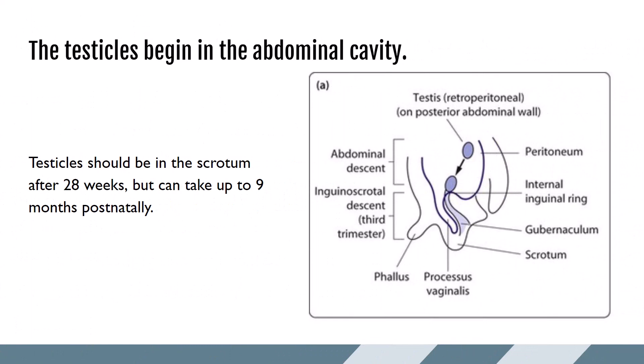Between 4 and 8 weeks gestational age, embryos with XY chromosomes begin to form testicles within the abdominal cavity. As human chorionic gonadotropin, or HCG, perfuses the embryo, the Leydig cells of the early testicles begin to secrete testosterone. In all fetuses, the genital tubercle develops between 8 and 9 weeks gestational age, becoming more apparent by ultrasound around 12 weeks. In fetuses with XY chromosomes and the secretion of testosterone, the tubercle will develop into the penis, and at that time the labioscrotal swellings fuse to form the scrotum.